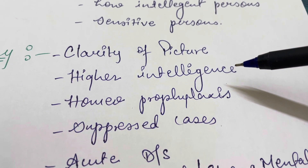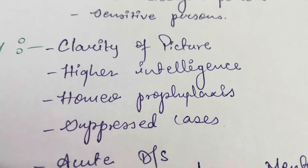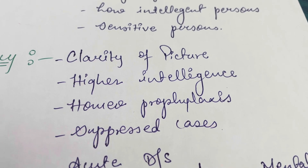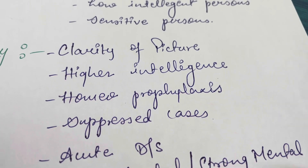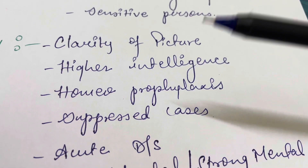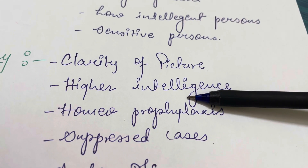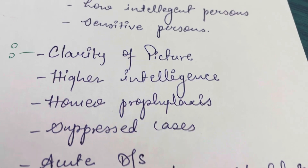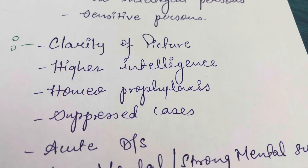Higher intelligence — people with higher IQ and active thought processes are candidates for higher potency. This relates to the mental and intellectual engagement of the patient.